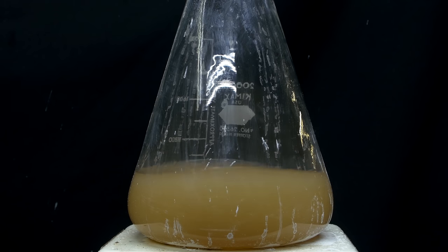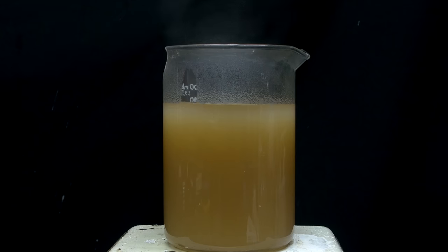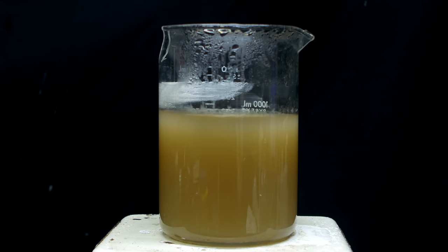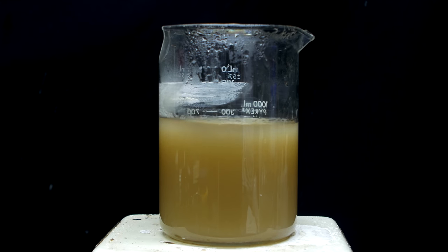Once the volume gets down to around 800 milliliters, I transfer it to a 1 liter beaker. Erlenmeyer flasks are actually terrible for boiling off liquid, and this beaker is going to work a lot better.